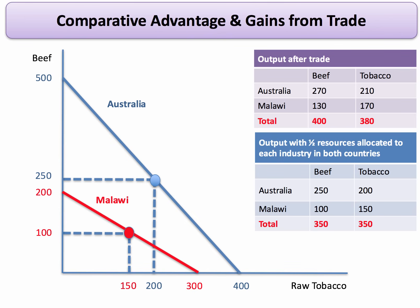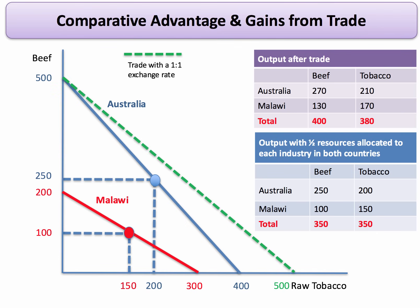We can develop the analysis further by thinking about how the PPF would shift if we trade at one for one. Australia, for example, if it produced 500 units of beef, could in theory export those and trade for 500 units of tobacco. Of course in reality it wouldn't, but the PPF can shift out at one for one. Malawi likewise has 300 units of tobacco and in theory could export those for 300 units of beef. In other words, trade based on mutually beneficial terms of exchange can cause an outward shift of a country's production possibility frontier — a key consequence of trade between nations.